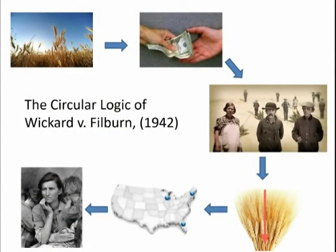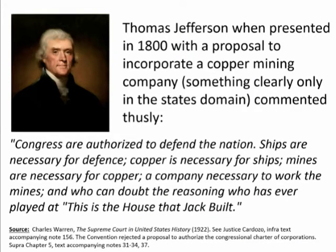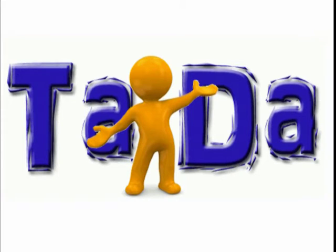So let's review. Because Roscoe Filburn grew his own wheat, he didn't buy any wheat. Because he didn't buy any wheat, it might influence others not to buy wheat. And if others didn't buy wheat, that could cause wheat prices to fall. And if wheat prices fell, that would affect interstate commerce, and that effect would exacerbate the Great Depression. So for that reason, the federal government had the authority to regulate the amount of wheat Roscoe Filburn produced on his own property. Thomas Jefferson laid bare this trick when he commented on an 1800 proposal to incorporate a copper mining company: Congress are authorized to defend the nation — ships are necessary for defense — copper is necessary for ships — mines are necessary for copper — a company necessary to work the mines. And who can doubt this reasoning? This is the house that Jack built. And that's the trick — over and over, this is how the federal government gives itself authority to do anything it deems necessary.